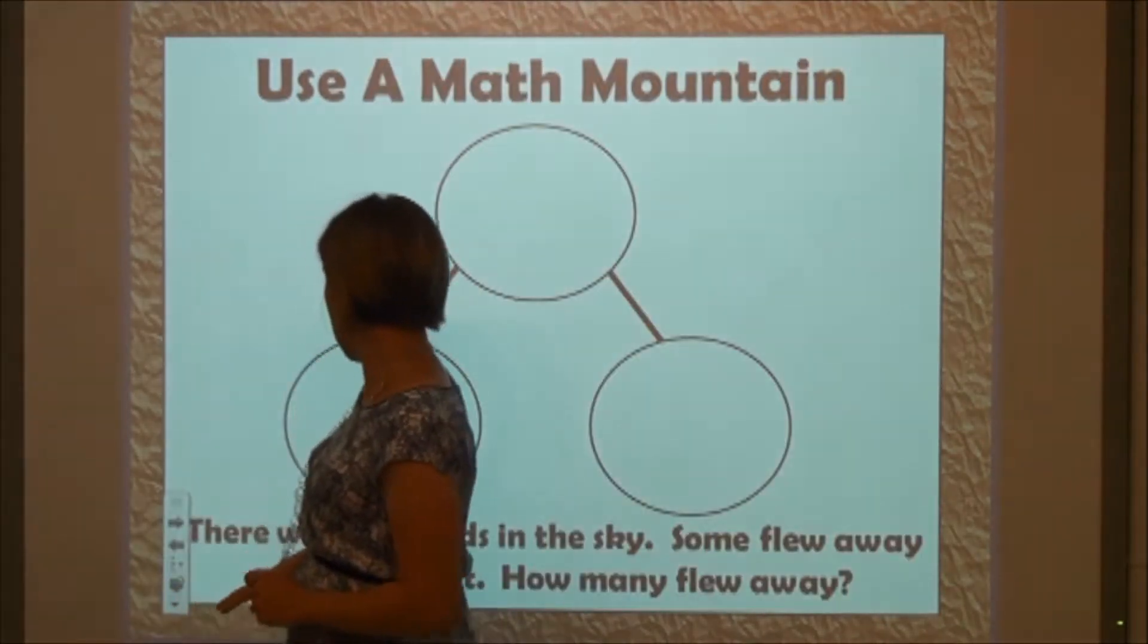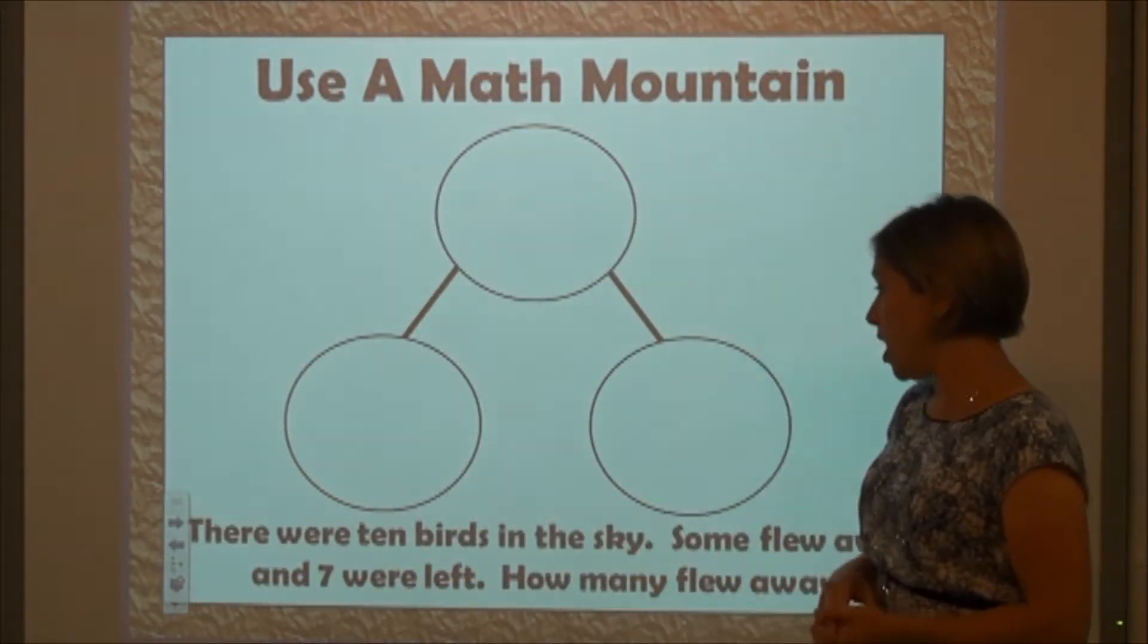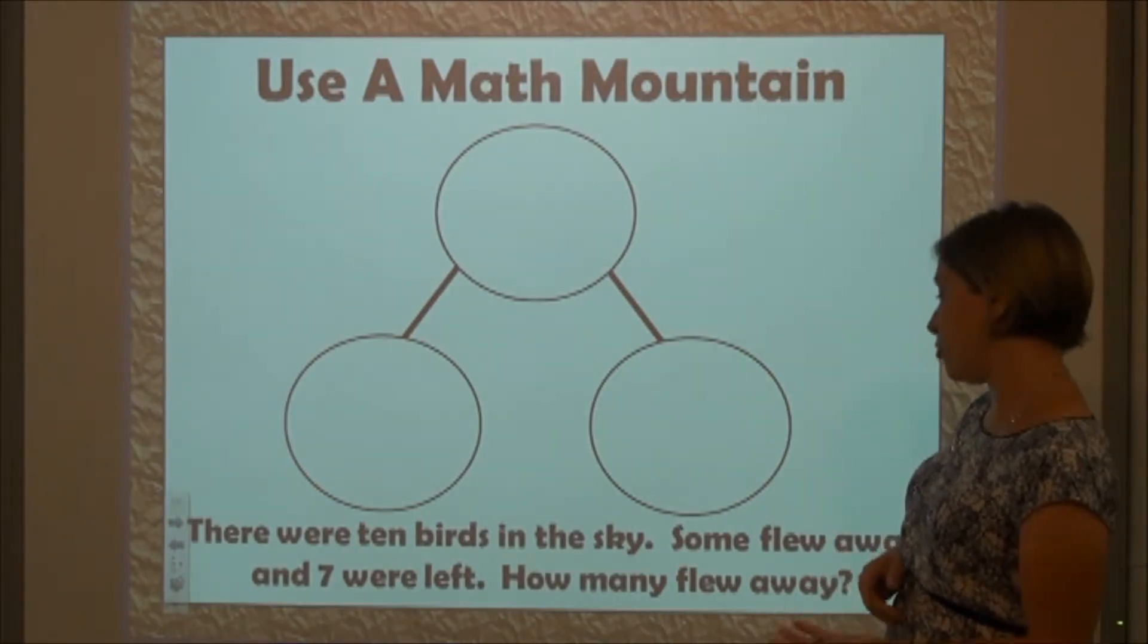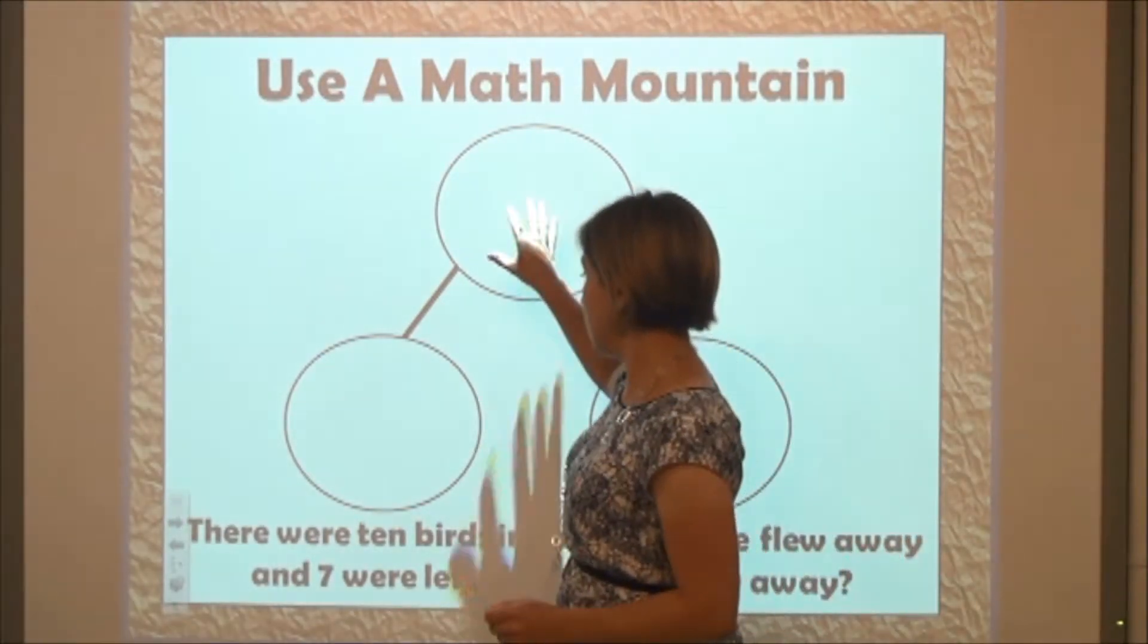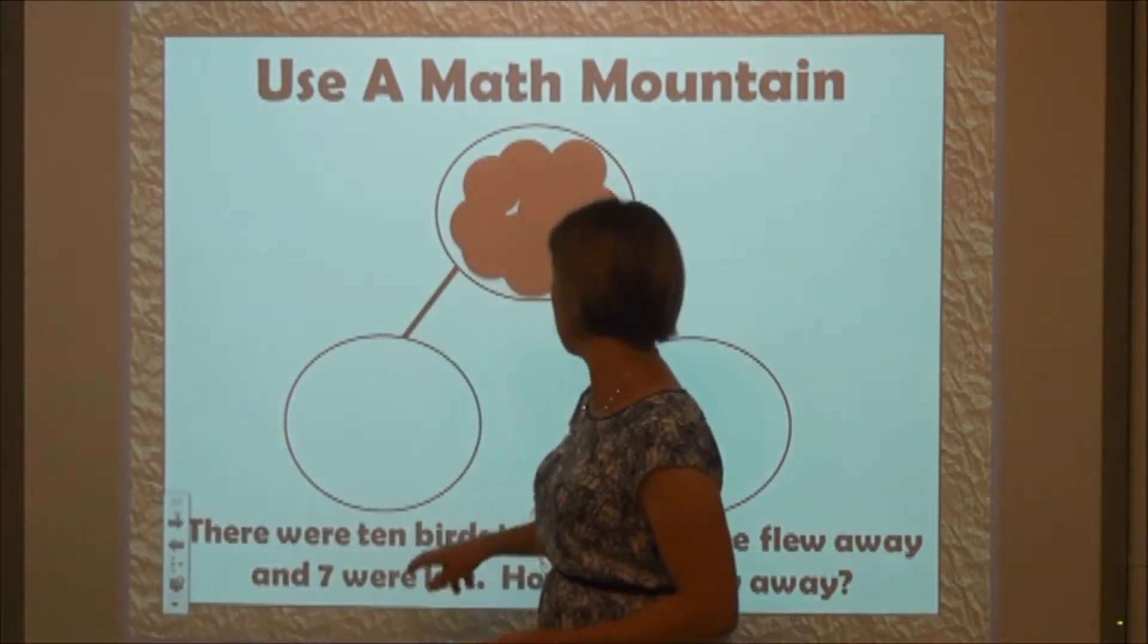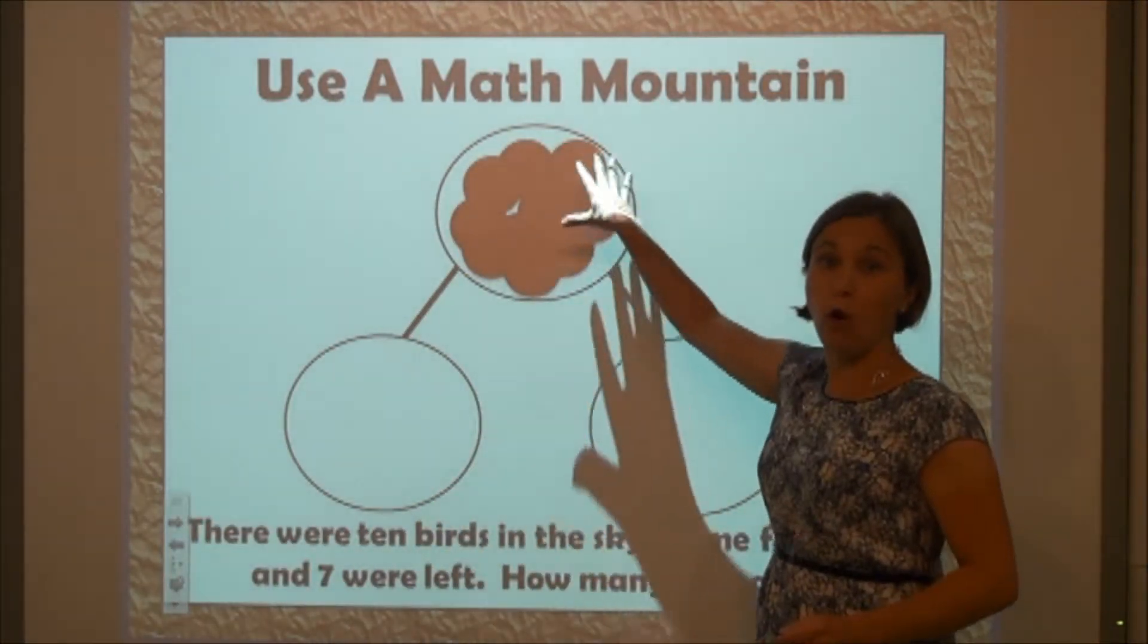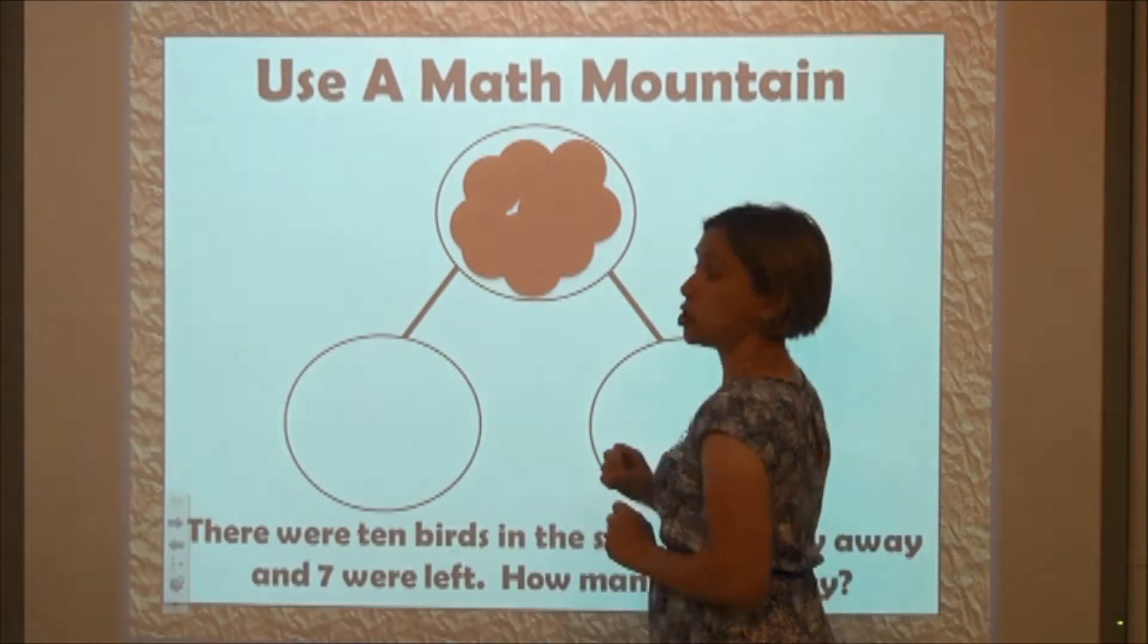We can also do a similar problem using the math mountain. There were ten birds in the sky, some flew away and seven were left. How many flew away? The top of the math mountain always shows the total or the whole amount and the bottoms always show the parts.